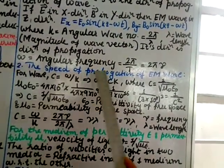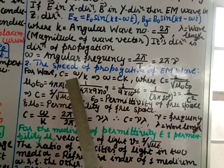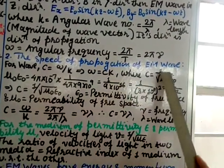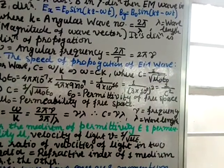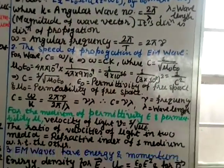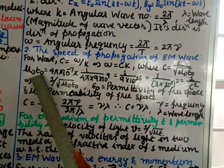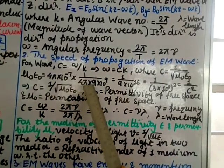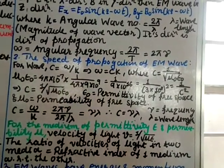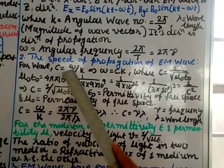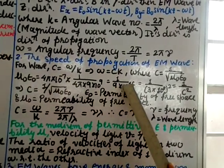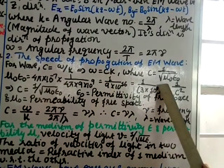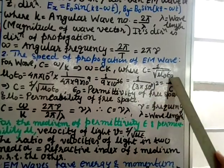Property 2: The speed of propagation of EM waves. For waves, C = ω/K, which means ω = C·K, where C = 1/√(μ₀ε₀). The value of μ₀ is 4π × 10⁻⁷ and ε₀ is 1/(4π × 9 × 10⁹). The 4π terms cancel, giving 1/(9 × 10⁻¹⁶), which can be written as 1/(3 × 10⁸)², and this is nothing but the speed of light. So μ₀ε₀ = 1/C².